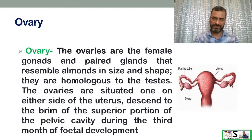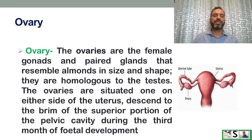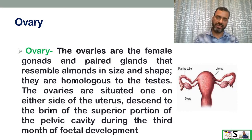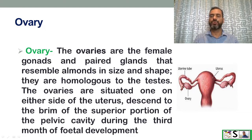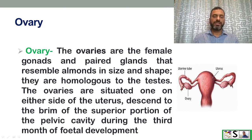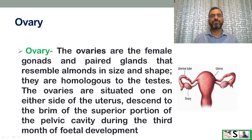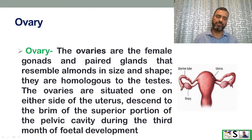The first organ is the ovary. The ovaries are female gonads and are paired glands that resemble an almond in shape and size. They are homologous to the testes in males. The ovaries are situated one on either side of the uterus. Like testes, they develop in the abdomen but descend to the brim of the pelvis during the third month of fetal development.